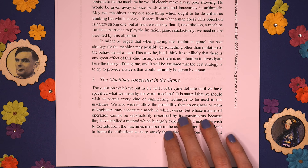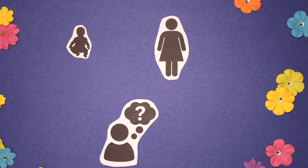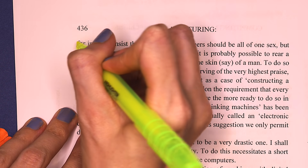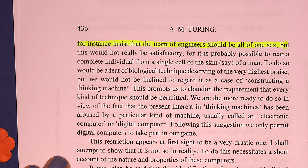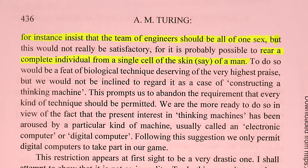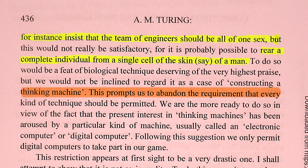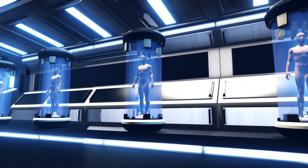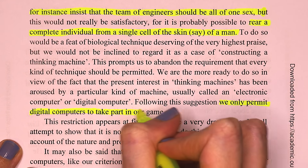Things go totally off the rails in the next section where Turing is defining requirements to enter a machine into the game. He seems worried that a team of engineers will enter a human they made instead. He writes that one might insist the team of engineers be of all one sex, but that it's probably possible to rear a complete individual from a single cell of skin, which would be a feat of biological technique but not constructing a thinking machine. He settles on saying that only digital computers will be allowed to take part.